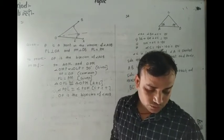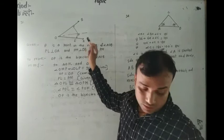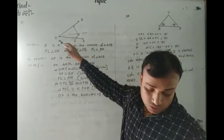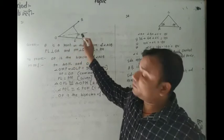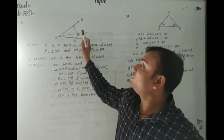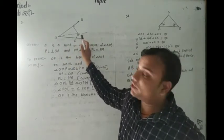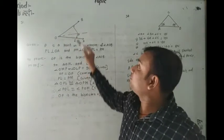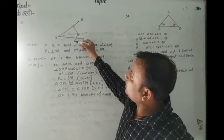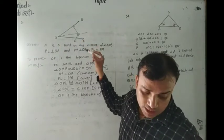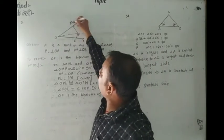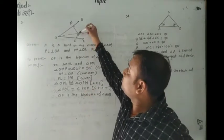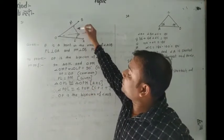Question is Set 2. In the adjoining figure, O is a point. P is a point in the interior of angle AOB. If PL perpendicular to OA and PM perpendicular to OB such that PL equal to PM...